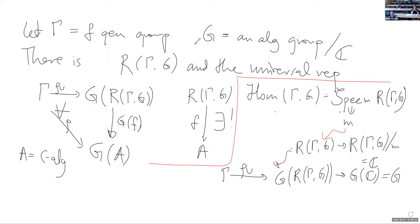This is an algebraic set which describes and classifies all representations of Γ into G, called the representation variety. This variety may be non-reduced, meaning it may have non-zero nilpotents. That's a weird thing.